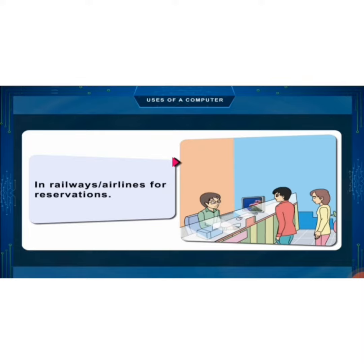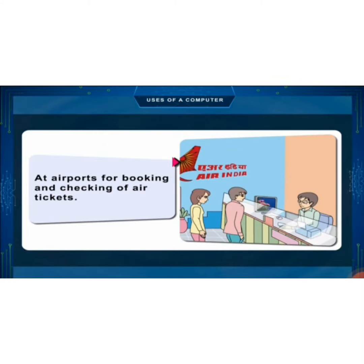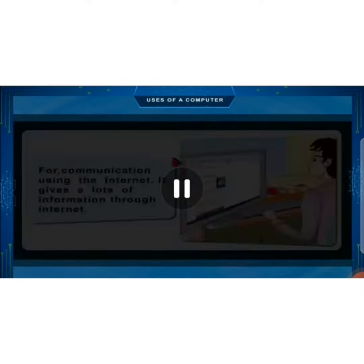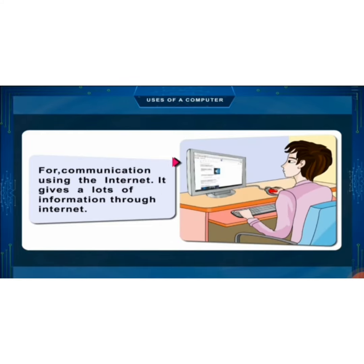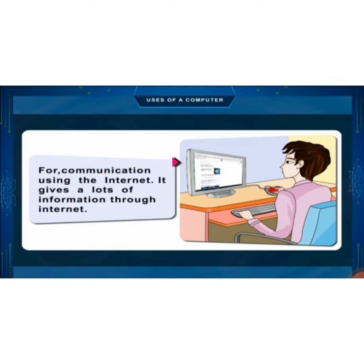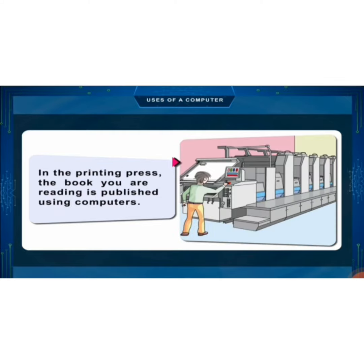In offices, computers are used for maintaining records of people and their work. In railways and airlines for reservations, at airports for booking and checking of air tickets, and for communication using the internet. Computers give a lot of information through the internet. In the printing press, the books we read are published using computers.